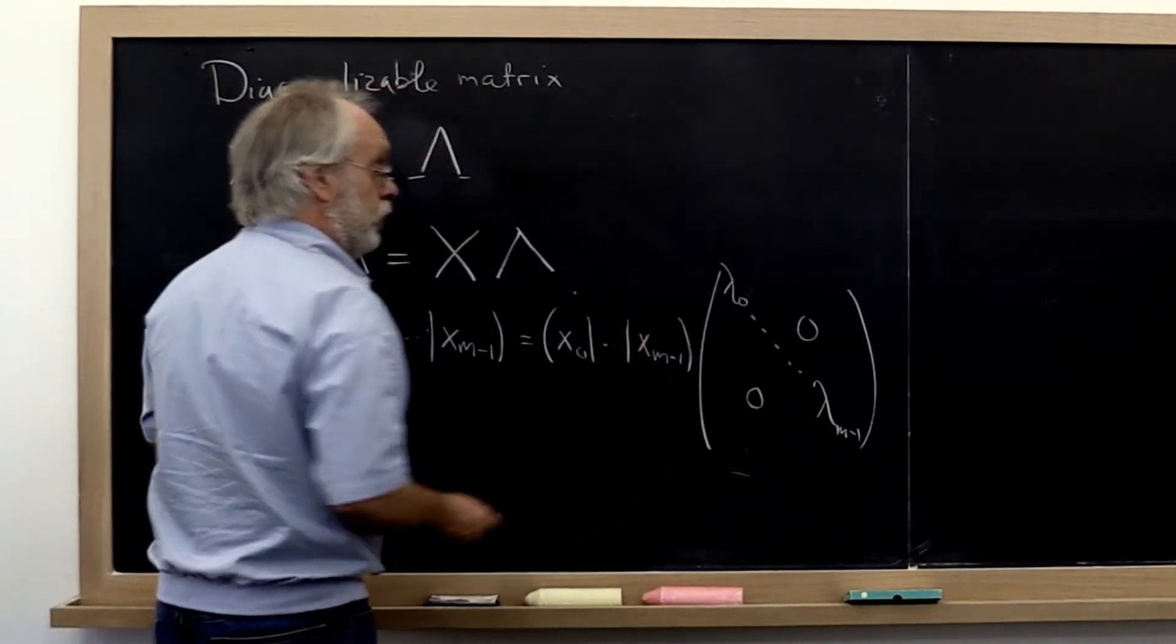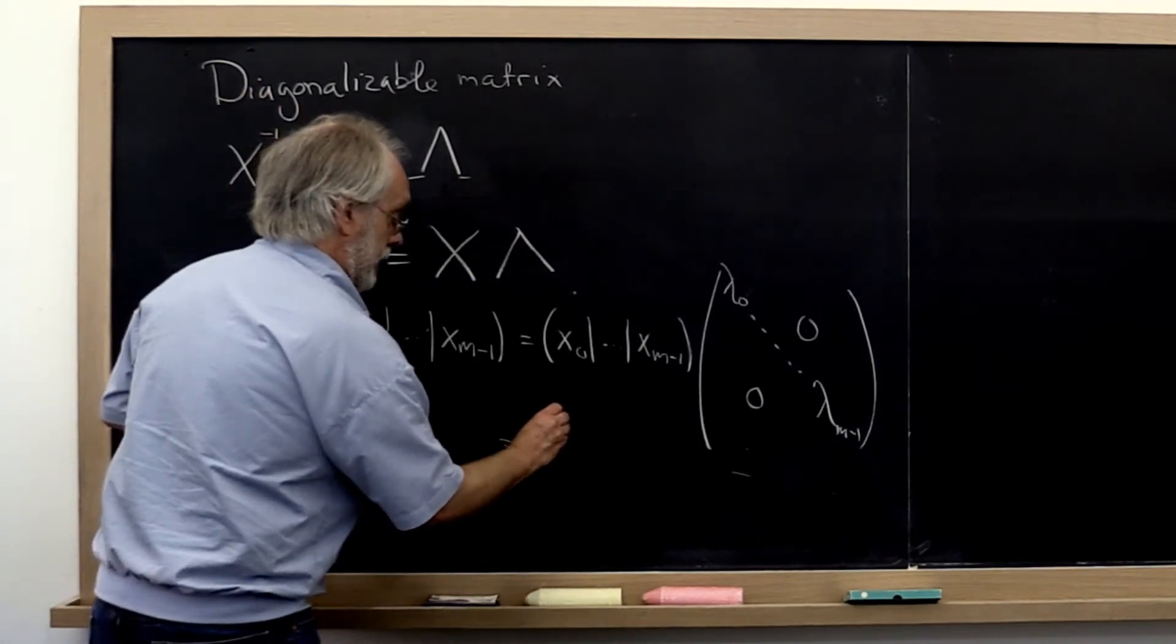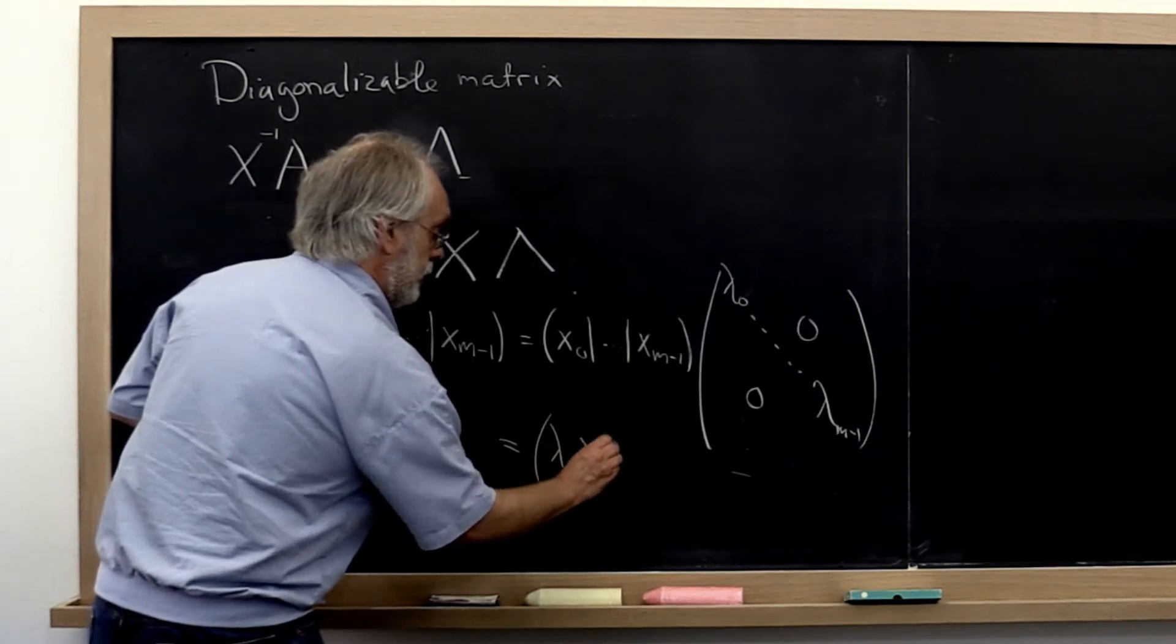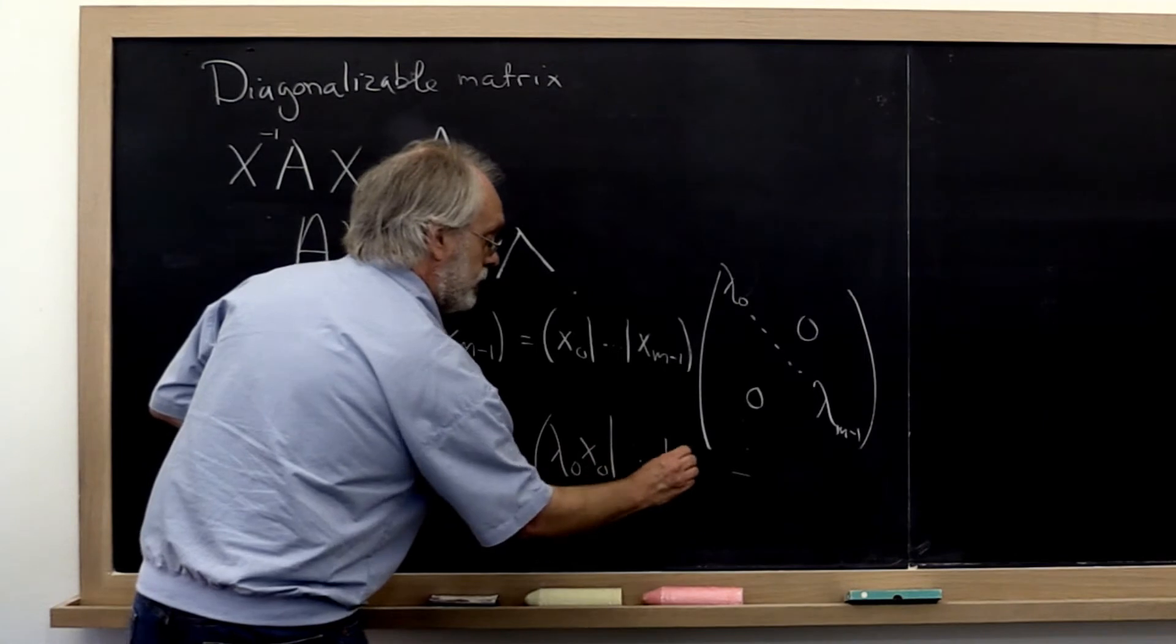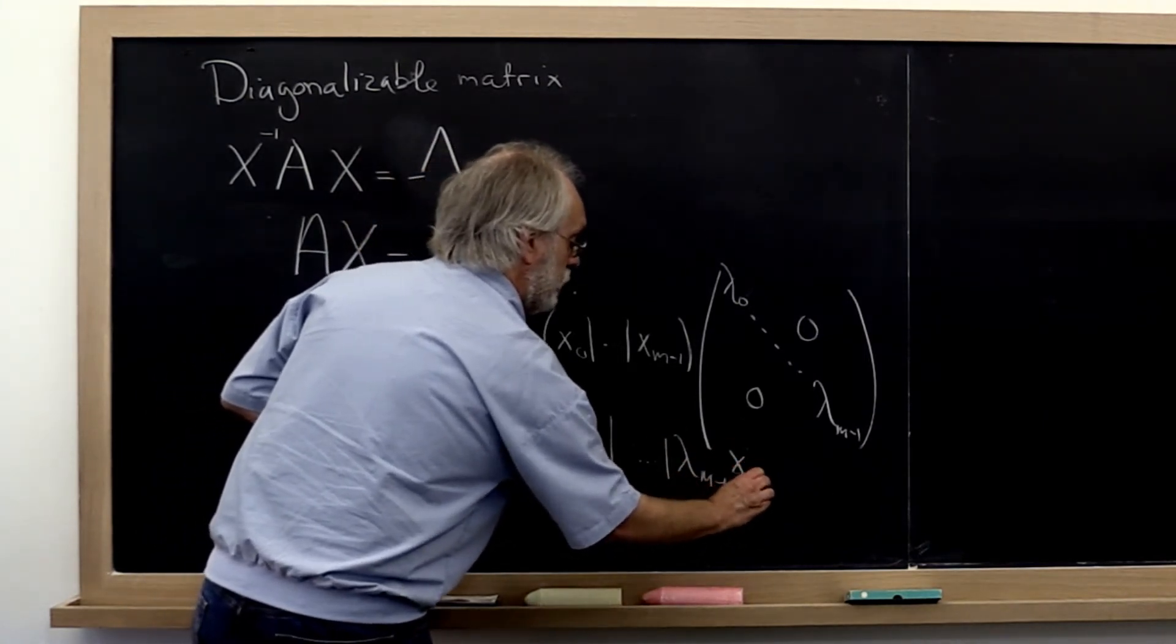Multiplying out what we have on the right gives us the first column is lambda_0 times X_0, the next column is lambda_1 times X_1, and so forth. So we get lambda_{M-1} times X_{M-1}.